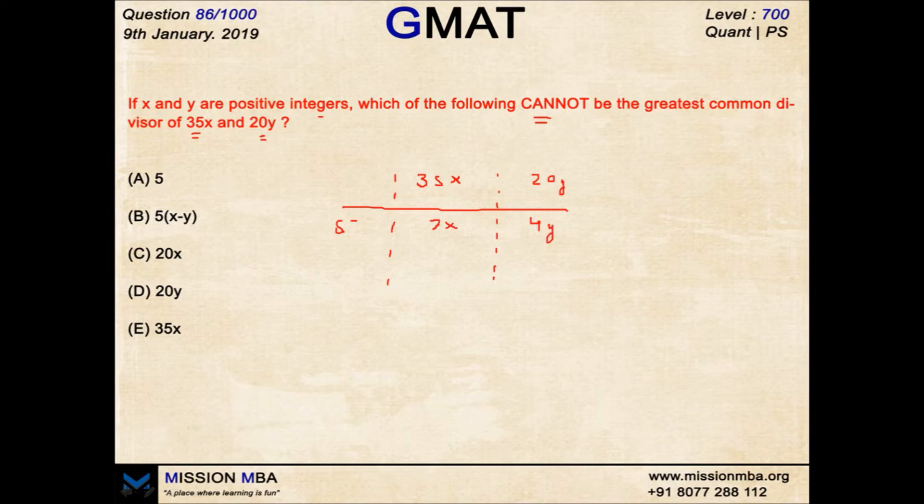Now I need to see what maximum can be taken out from 7X and 4Y. Can the GCD itself be 5? Of course, yes. If X and Y become co-primes to each other and to 4 and 7. For example, if X becomes 3 and Y becomes 2, this turns out to be 21 and this turns out to be 8. Of course, the maximum common factor is going to be 5 in this particular scenario because X and Y are co-primes and nothing can be taken out more because 3 is not there in 4 and 2 is not there in 7. So this cannot be the answer. Gone.